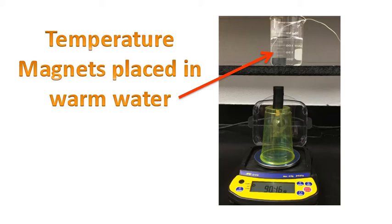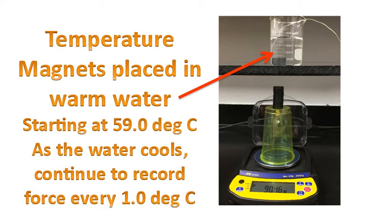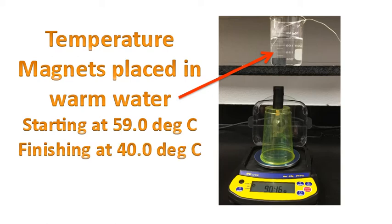To control the temperature, we have placed the magnets in warm water. At 59 degrees Celsius, we'll begin to measure the force acting between these two magnets. As the water cools, we'll continue to record the force every decrease of 1 degree Celsius. And the experiment finished at 40 degrees Celsius.